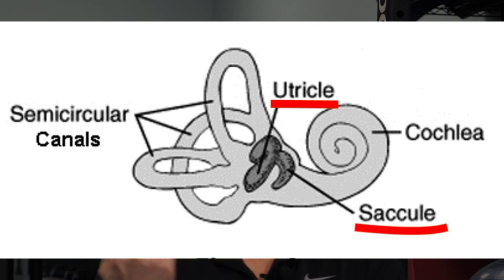Inside the utricle is fluid called endolymph, which is very thick, kind of like oil. As someone moves forward or backward, tiny calcium carbonate crystals in this area move, and as those crystals move they bend the hair cells lining the cavity. That tells your brain whether you're moving forward or backward, or accelerating or decelerating.